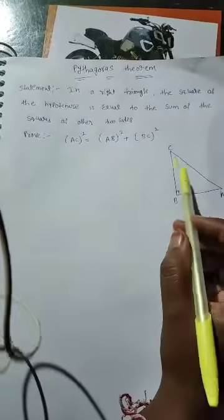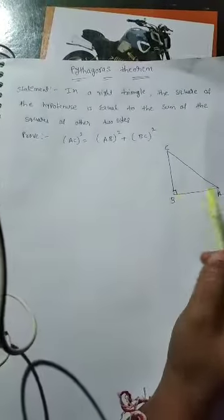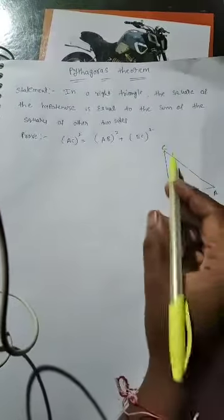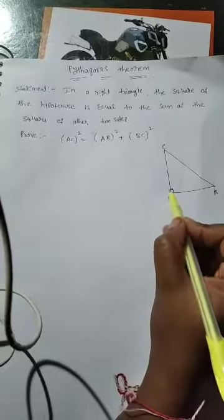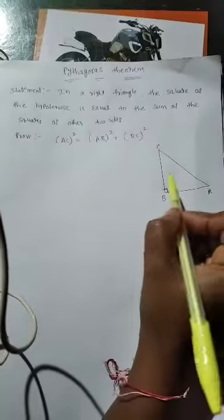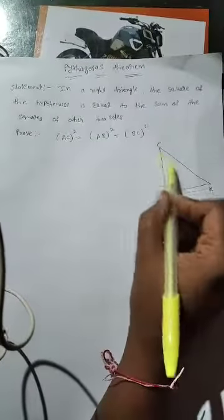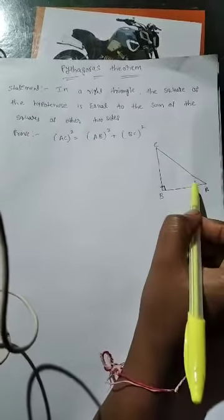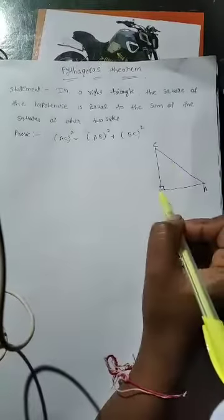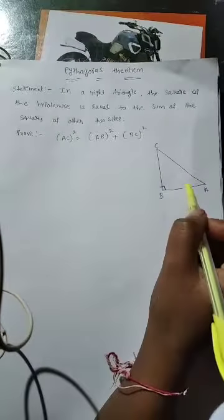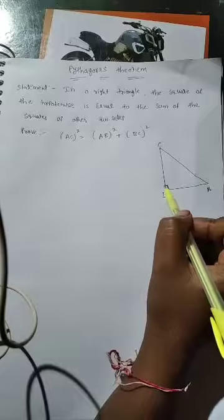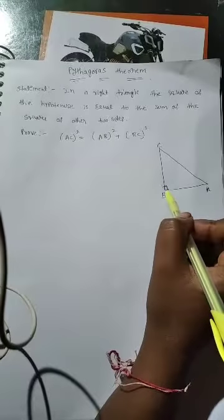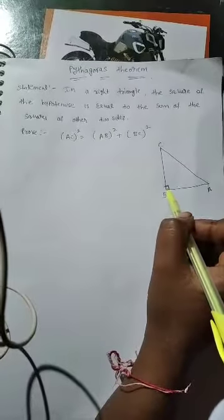The first definition is the right angle triangle — a right angle triangle has an angle of 90 degrees. The second definition is the hypotenuse. The hypotenuse exists only in a right angle triangle, and the hypotenuse is exactly opposite to the right angle, that means opposite to the 90 degrees.